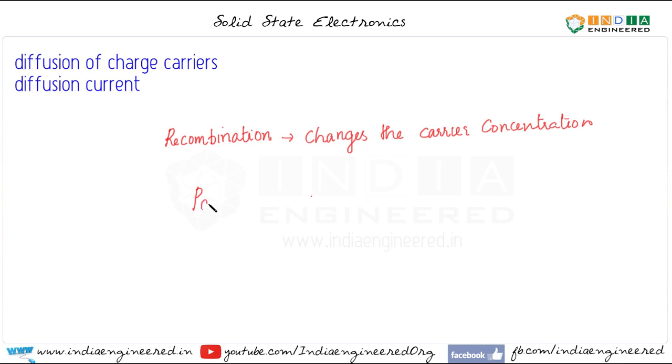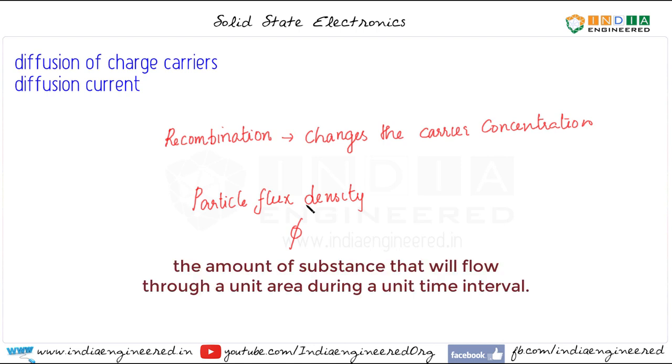Let's denote the particle flux density by phi. Particle flux density is simply the number of particles crossing a unit area per second. It denotes the number of carriers crossing a unit area per second.